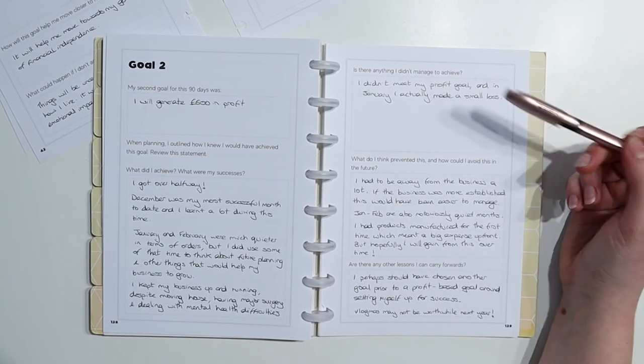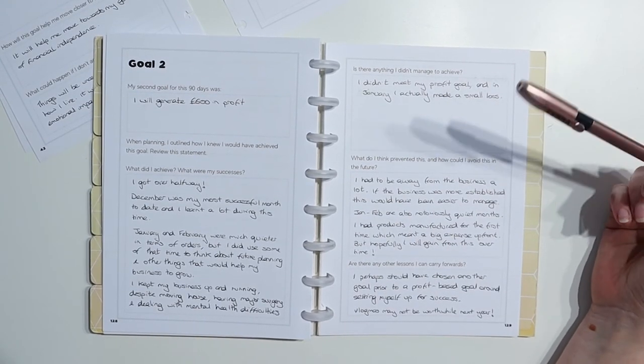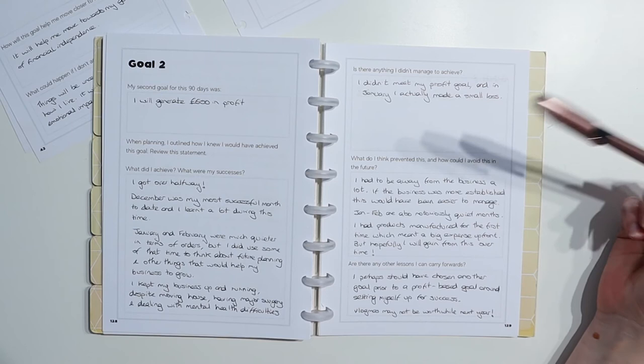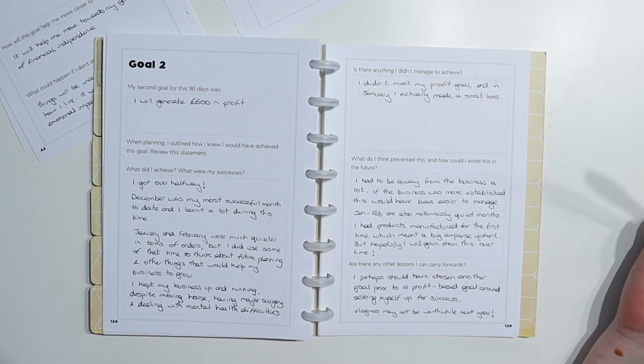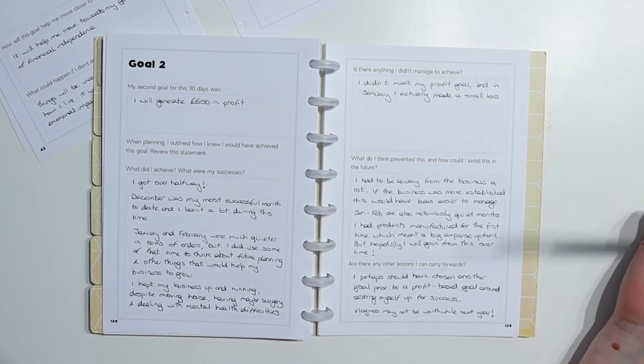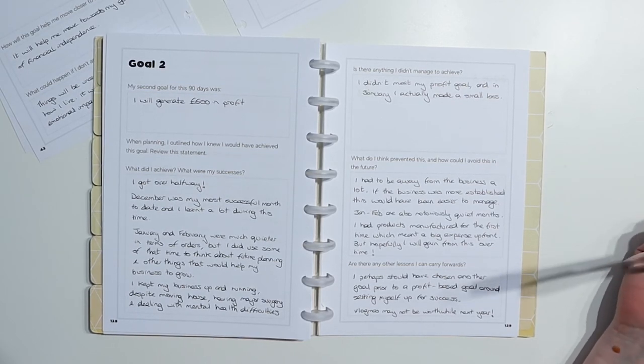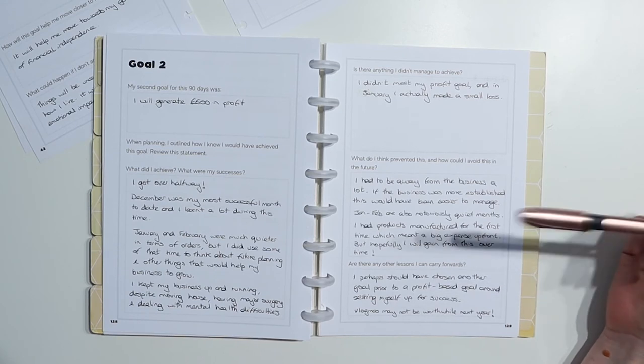So, the fact that I did all that, despite what was going on, I'm chalking up as a big success, because, yes, this is a business goal, but things don't happen in isolation. My personal life affects my business life, and vice versa, and you've got to look at the whole picture. So, is there anything I didn't manage to achieve? So, I've said I didn't meet my profit goal, and in January, I actually made a small loss. So December, good month. January, made a loss. Not a big loss, just a small loss. And then February, things picked up again.